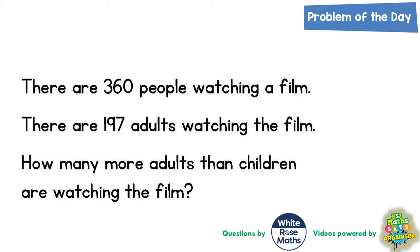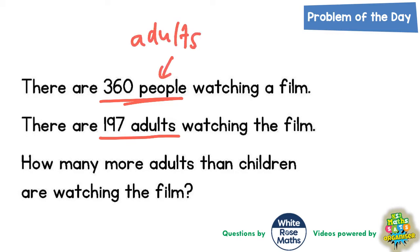Welcome problem solving fans to another problem of the day. This one's all about some people watching a film. There are 360 people watching a film and 197 are adults. The word 'people' means adults plus children, so we need to figure out how many more adults than children are watching the film.